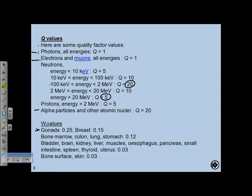The tissue weighting factors W_T: gonads are highest, breast is 0.05, bone marrow, colon, lung, and stomach are 0.12 each. Colon and stomach are sensitive because their epithelial cells multiply very quickly — cells in a radiosensitive part of the cell cycle are more likely to experience radiation side effects when they divide rapidly. Bladder, brain, and bone surface are 0.03. All the weighting factors sum to one.